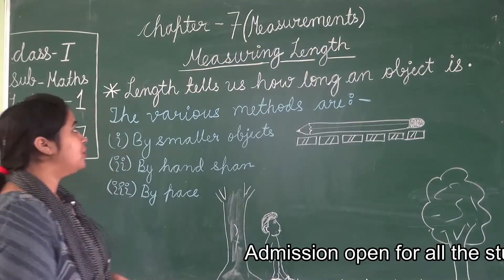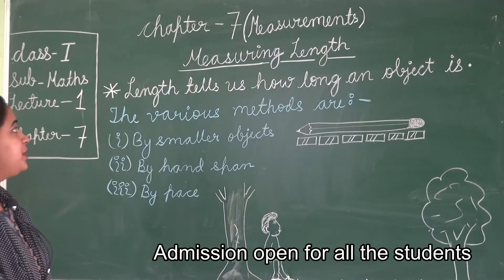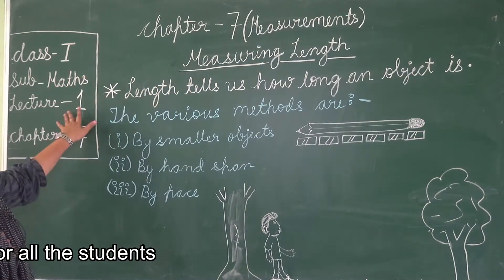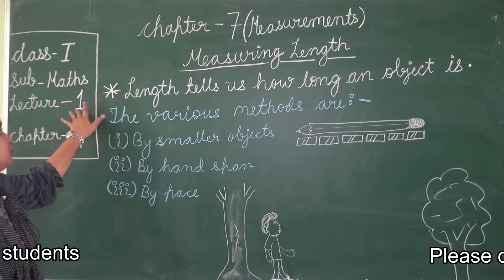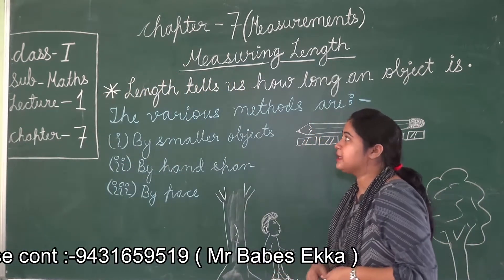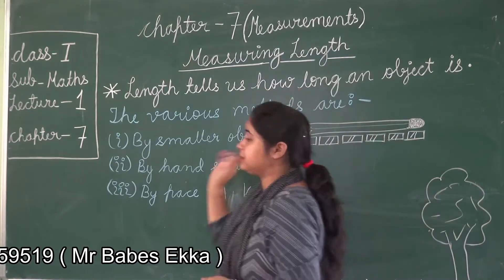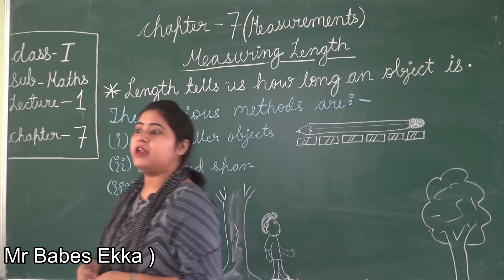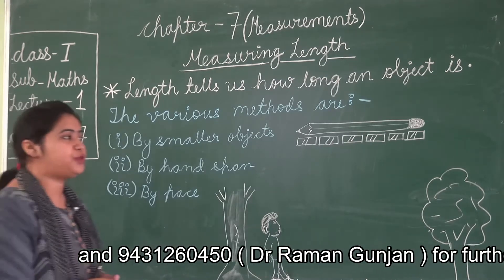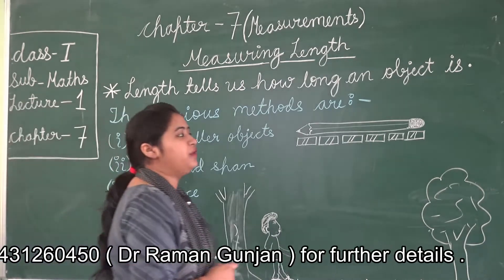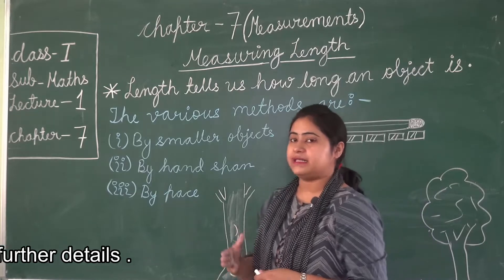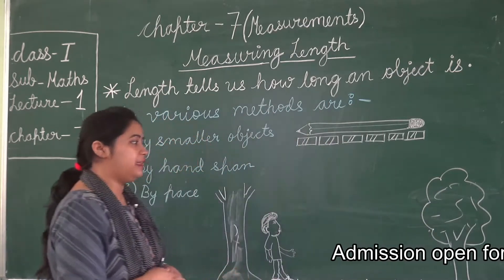Hello everyone. Today we are going to start Chapter 7 for Class 1, and this is our first lecture for Chapter 7 - Measurements. In this chapter we are going to discuss how to measure length. There are a number of ways in which we can measure the length of any object, for smaller objects as well as longer objects.